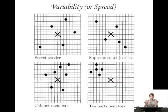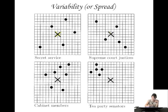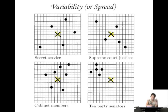Let's think about a conceptual way of thinking about variability. There are lots of different ways you could actually think about variability. Let me give you this example. Let's say this X shown in each of these is the president — right now, Barack Obama. These are different groups of people standing with him at some sort of formal event. Here we see the secret service, and this is how far each of them are from him.